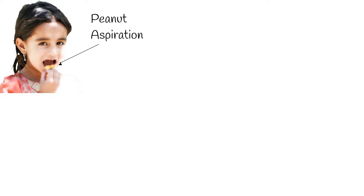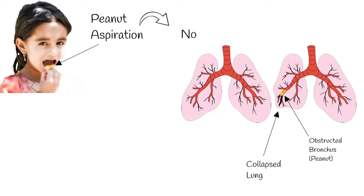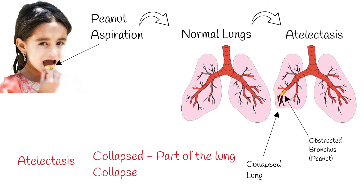A young child accidentally inhales a peanut. The peanut is large and it obstructs one of the major bronchi. The obstructed part of the lung will collapse, and we get non-expanded lung. This is called atelectasis. The collapsed area can be part of the lung or a whole lung.